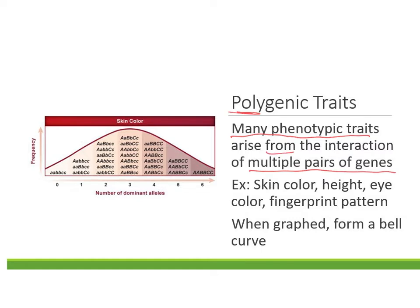A phenotypic trait is talking about a phenotype — the physical appearance, what you actually see. So what you outwardly express can depend on multiple pairs of genes. Examples include your skin color, your height, your eye color, and your fingerprint pattern. When we graph these traits, they form something called a bell curve.